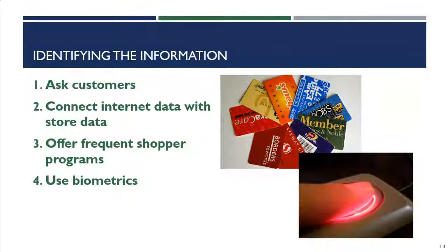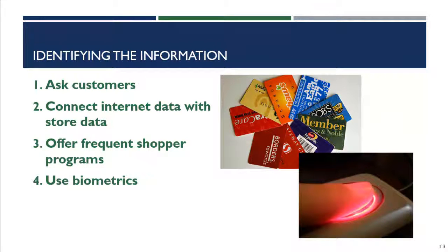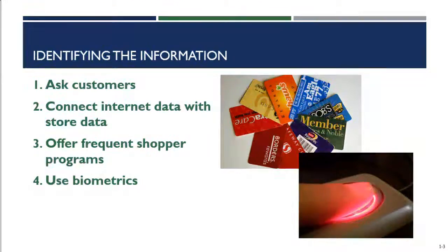Nowadays when you make a return, a retailer might ask for your receipt or look up your credit card. The future of retailing uses biometrics — if you scan your fingerprint, they can look up your purchase history. Fitness centers and tanning beds are already using biometrics to identify customers when they walk in the door; you register your fingerprint the first time and use it on subsequent visits to confirm your identity. The instructor asks students whether any of them have used biometrics at a retailer and what types of retailers they've used them with.